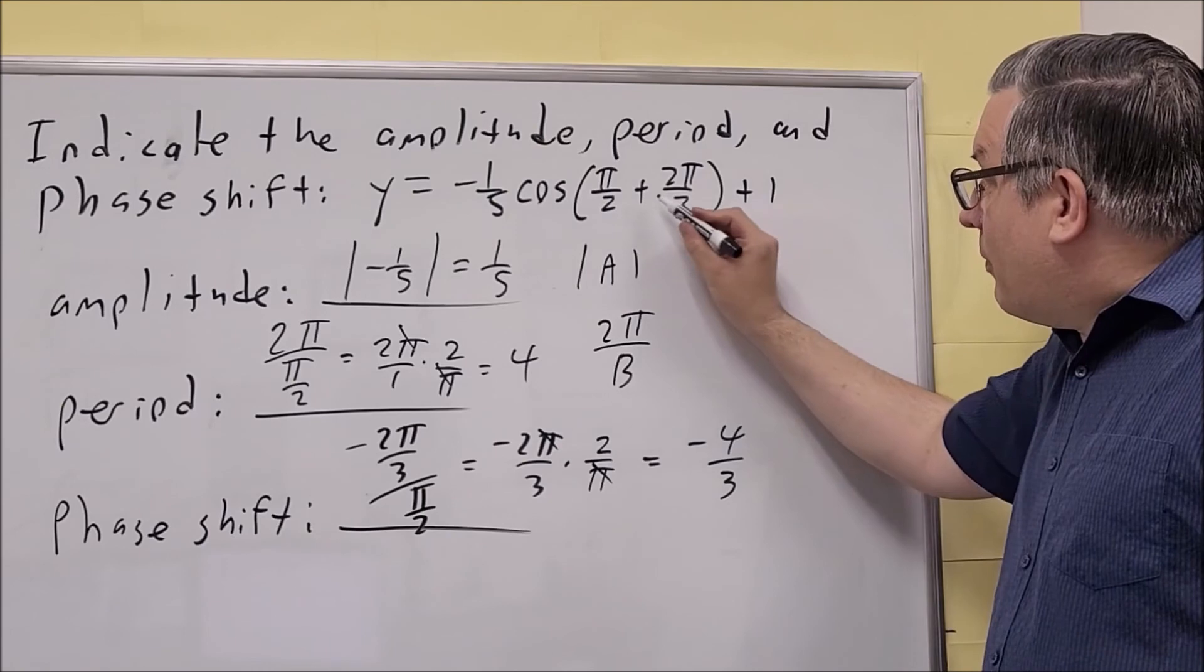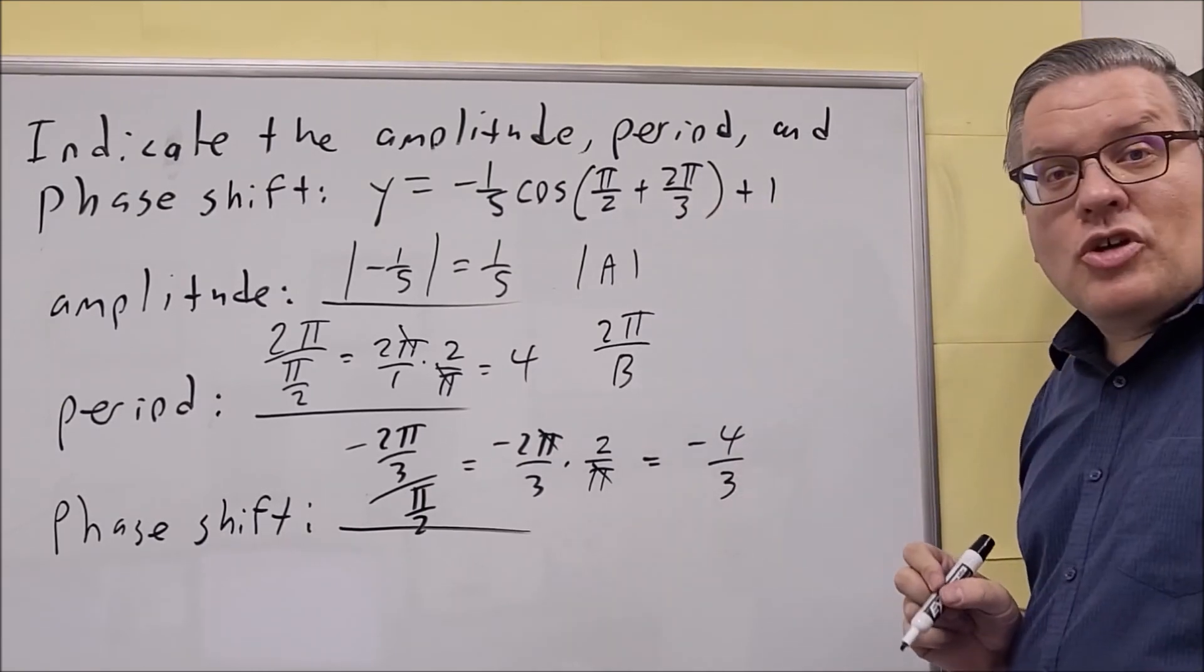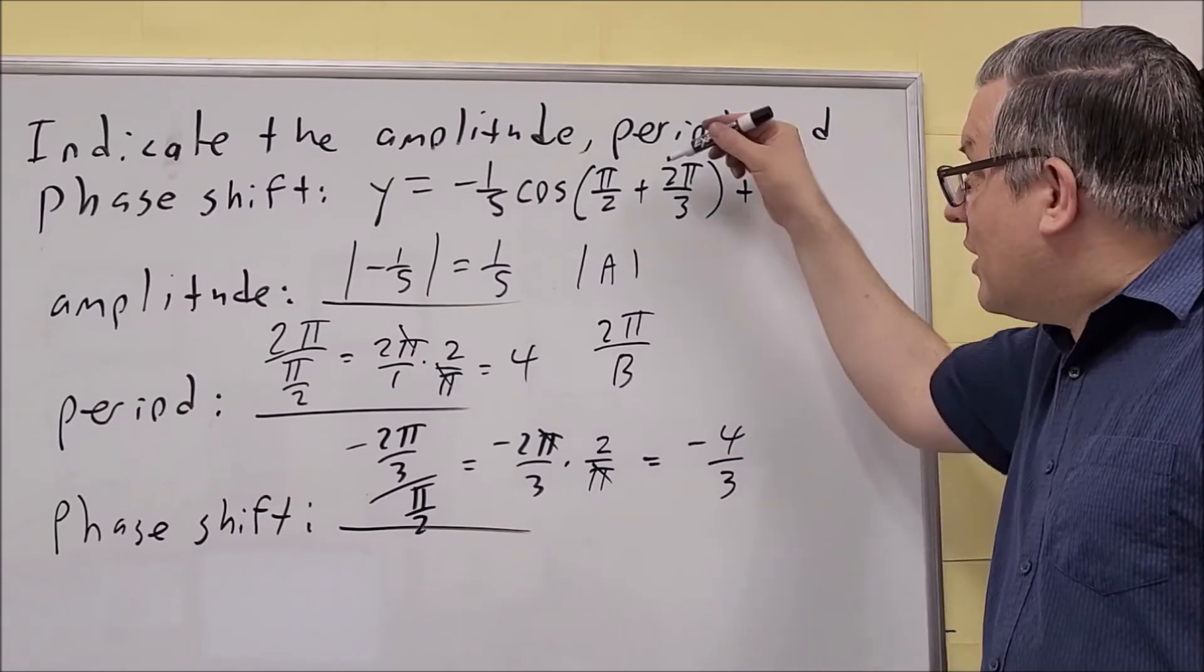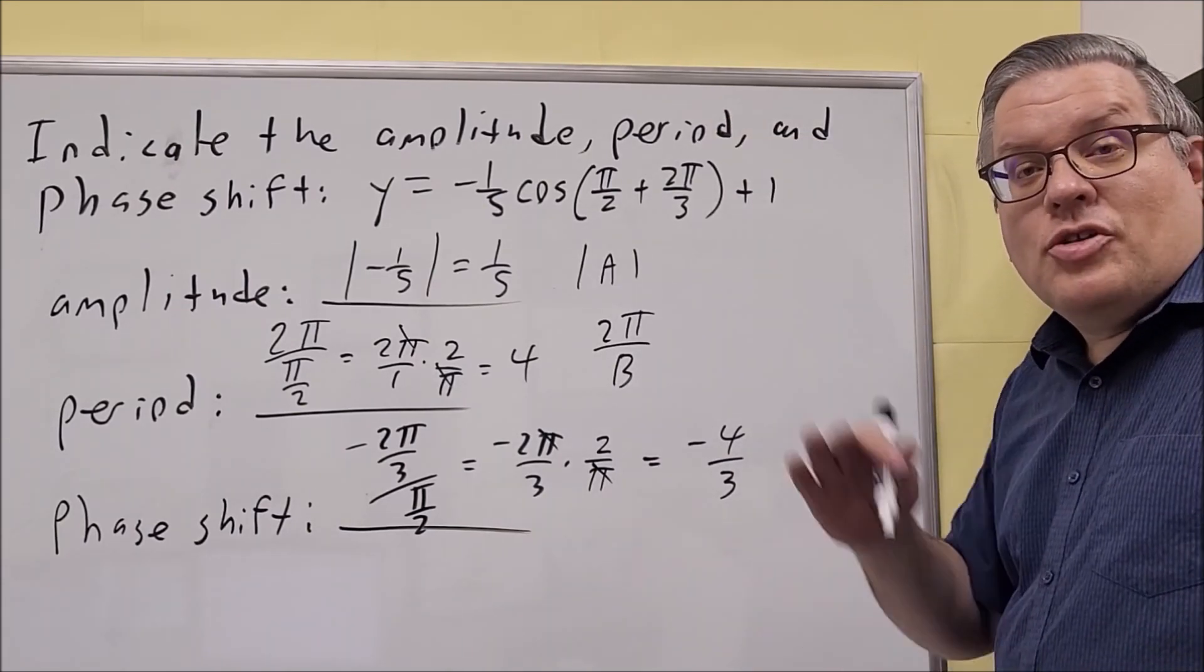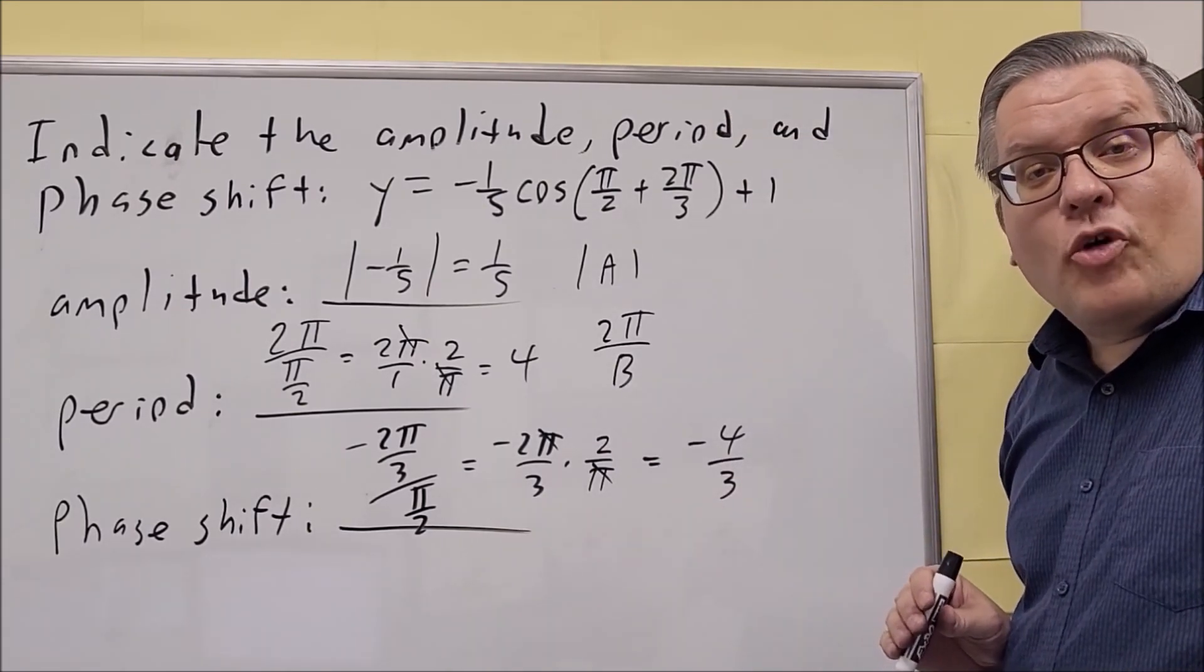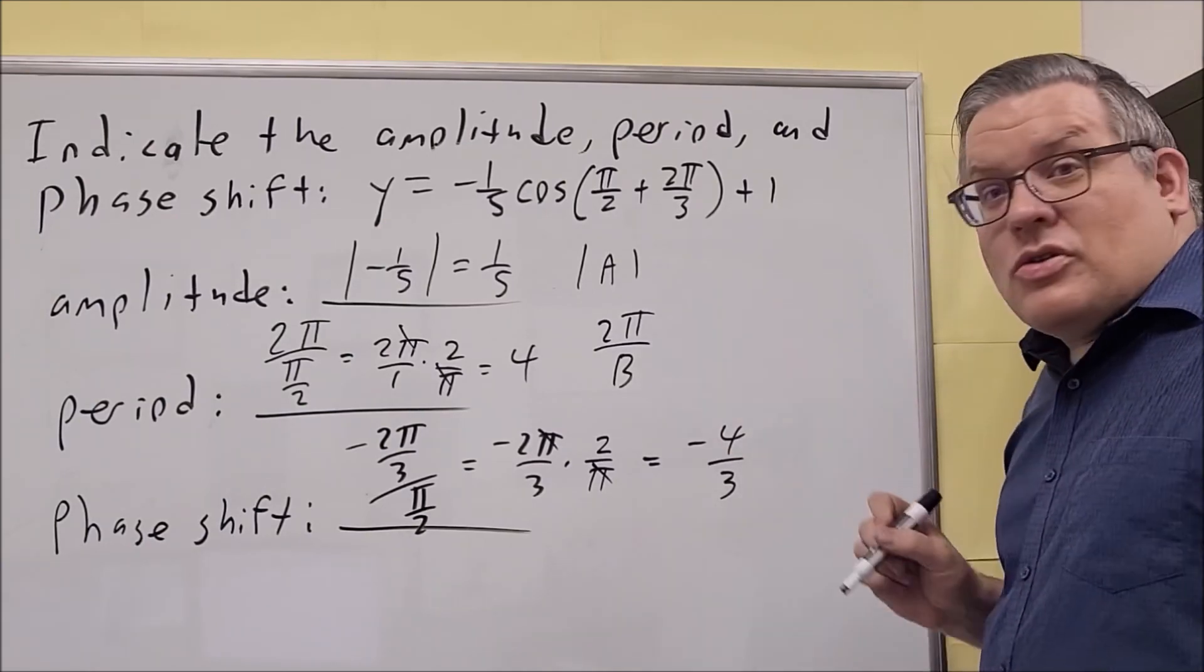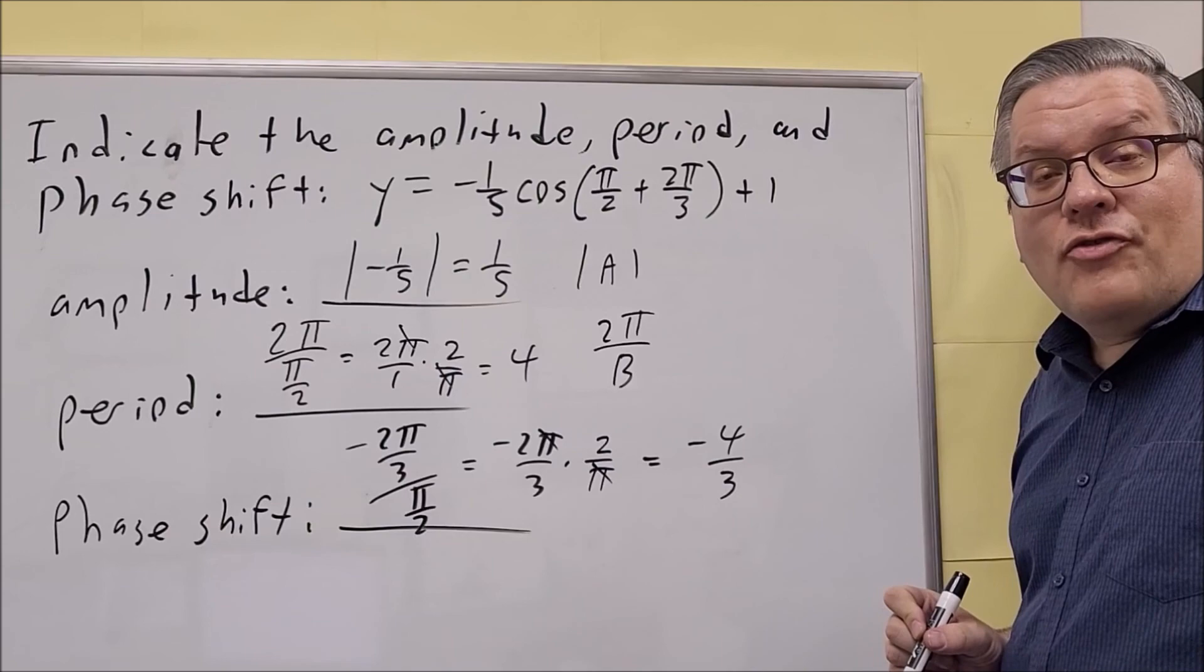So again, whenever you have a plus there, the phase shift is going to be negative. And the easiest way to think about that is just take the opposite sign. And so I'm going to do that from all the other examples moving forward here. Just going to take the opposite sign of that. But the formula still is C over B for your phase shift.